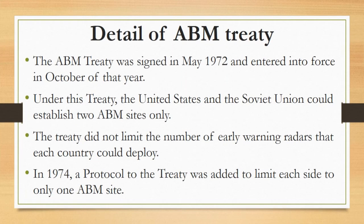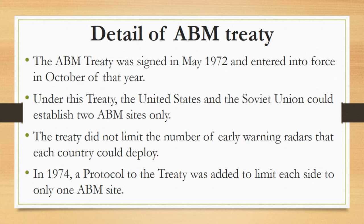The ABM Treaty was signed in May 1972 and entered into force in October of that year. Under this treaty, the United States and the Soviet Union could establish two ABM sites: one to protect the national capital and one to protect an ICBM launch site. The sites, each of which could have a maximum of 100 interceptors and 100 launchers, were required to be at least 807 miles or 1,300 kilometers apart to prevent the creation of a regional defense zone. The treaty did not limit the number of early warning radars that each country could deploy.